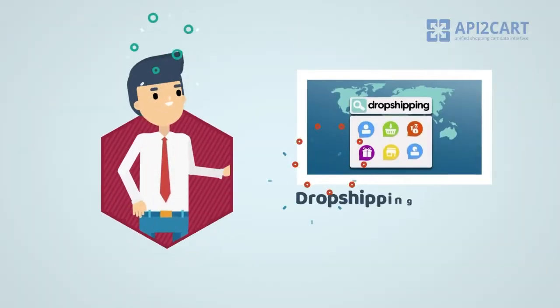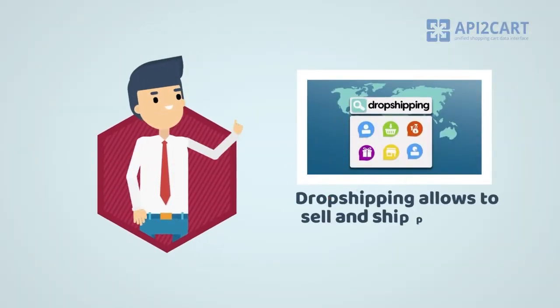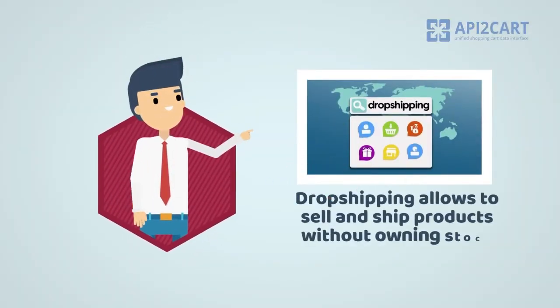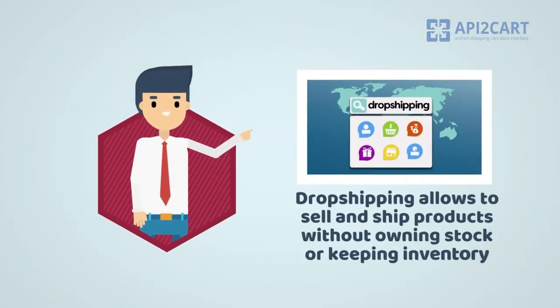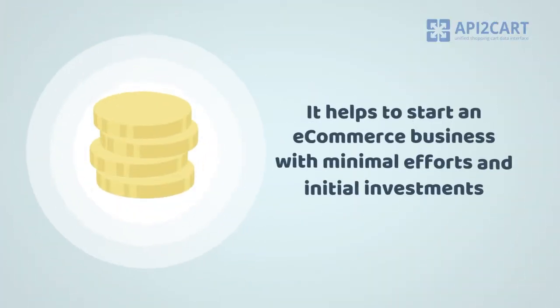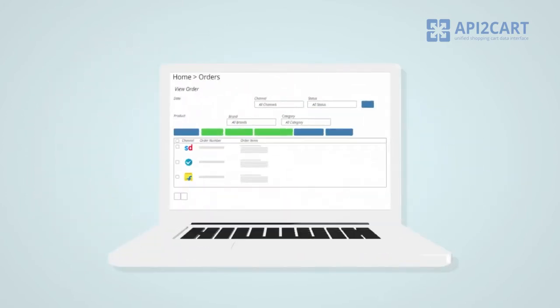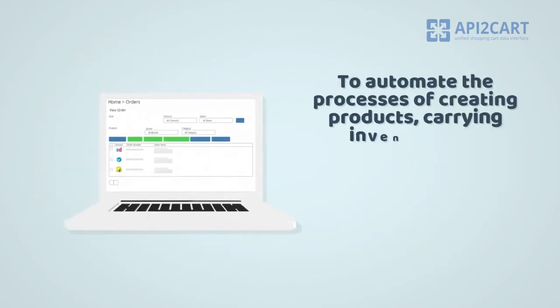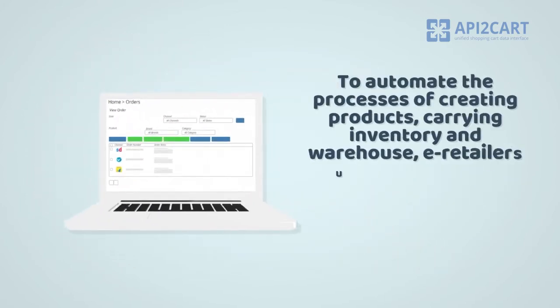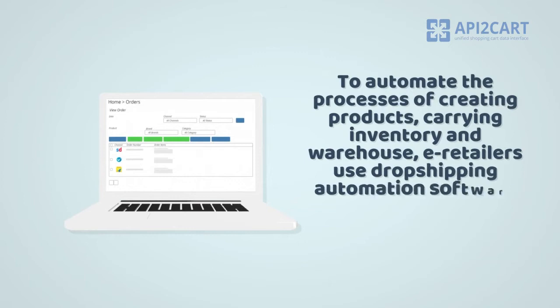Dropshipping is a business model that allows online retailers to sell and ship products without owning stock or keeping inventory. Moreover, it helps to start an e-commerce business with minimal efforts and initial investments. To automate the processes of creating products, carrying inventory and warehouse, e-retailers use dropshipping automation software.